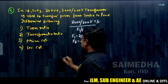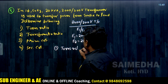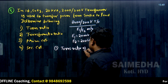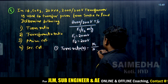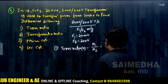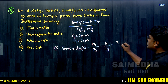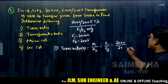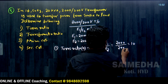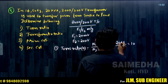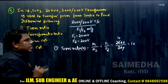Finding the turns ratio: turns ratio 'a' equals N1/N2, which equals E1/E2 = 2000 divided by 200, which equals 10. So the turns ratio is 10.